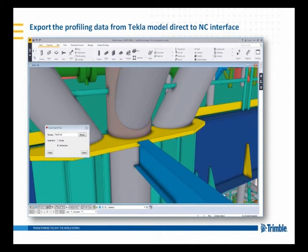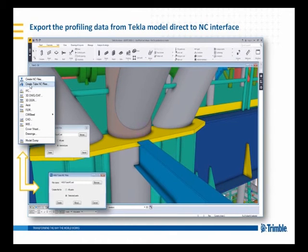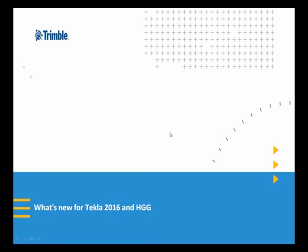Once you've used those connections on the model, we can then export that down to the pipe cutting machine. We say 'create the tube NC files,' either selecting all of the model or just parts, and then it creates the 3D cutting data to go directly down to the HGG pipe cutting machine, including all weld preparations and everything required.